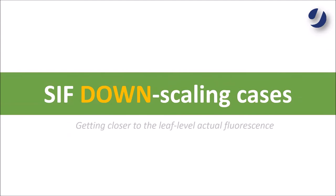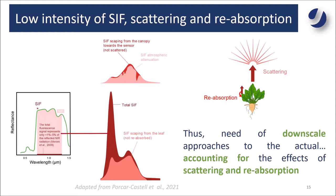Now let me move to the downscaling cases. Here I will show mostly works done at the Jülich Forschungszentrum, divided into two parts. First, looking at downscaling from the perspective of getting closer to leaf-level values. The total chlorophyll fluorescence emitted by a plant is less than 5% of the reflected light in the near-infrared spectrum — just to give you an idea of how low intensity it is. The total SIF emitted in a leaf can be reabsorbed by the plant.